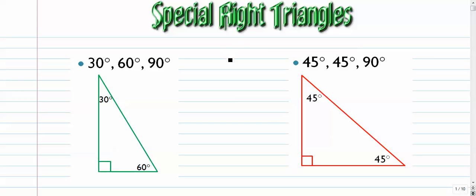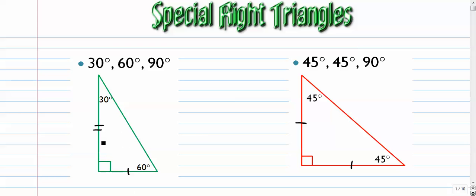Alright, a few examples on special right triangles. When we say special, we mean that the right triangles have very particular acute angles: 30, 60, 90, and 45, 45, 90. This one is a little bit easier to work with because it's isosceles, whereas this one is scalene — all the sides are different.